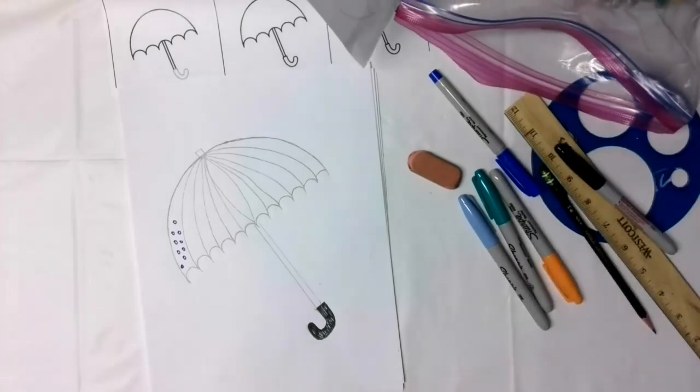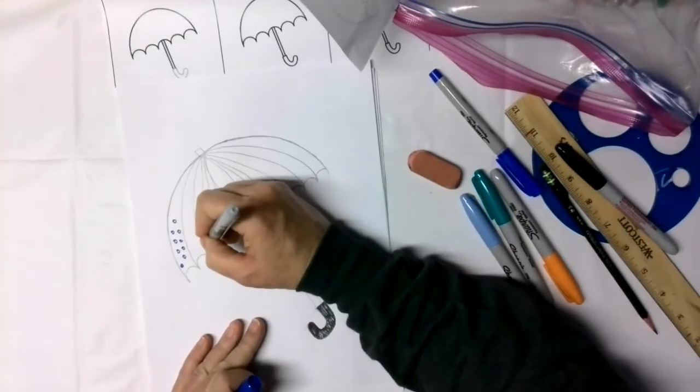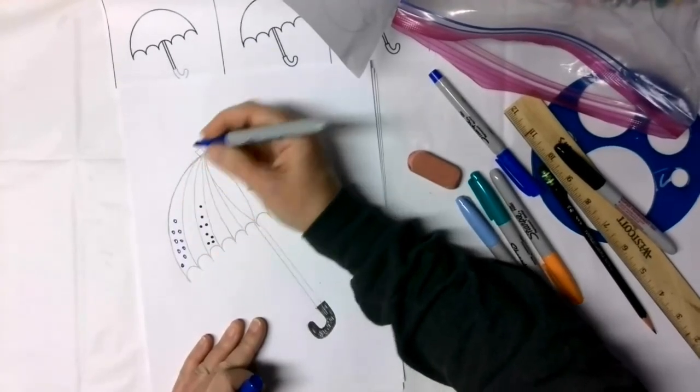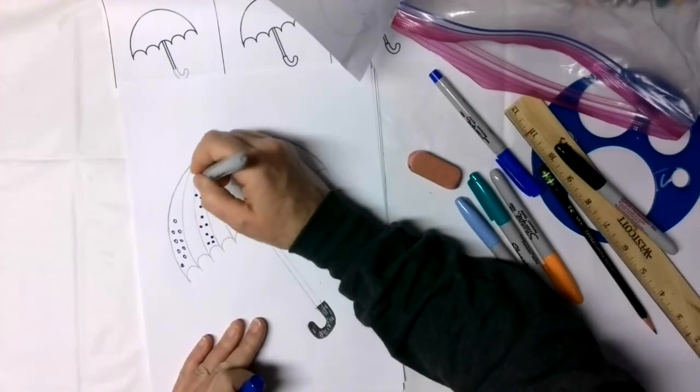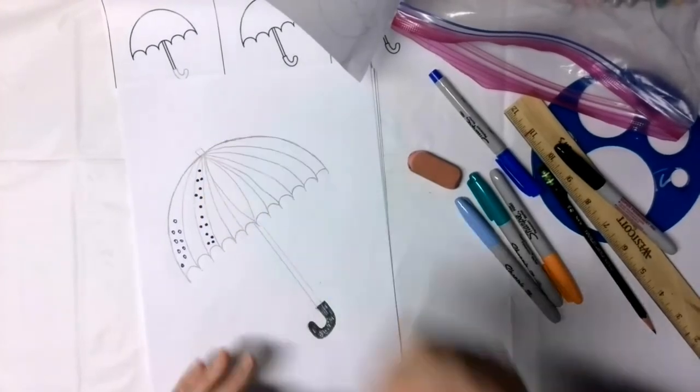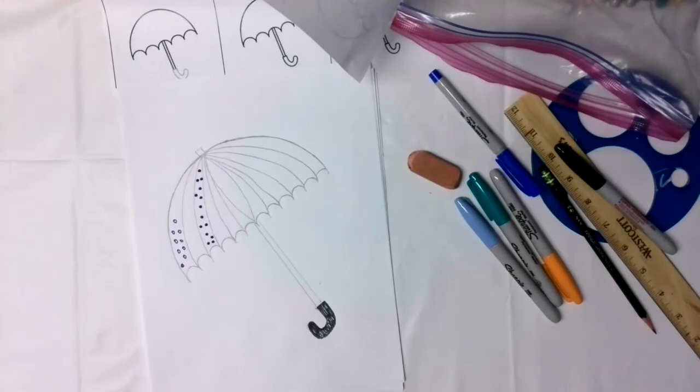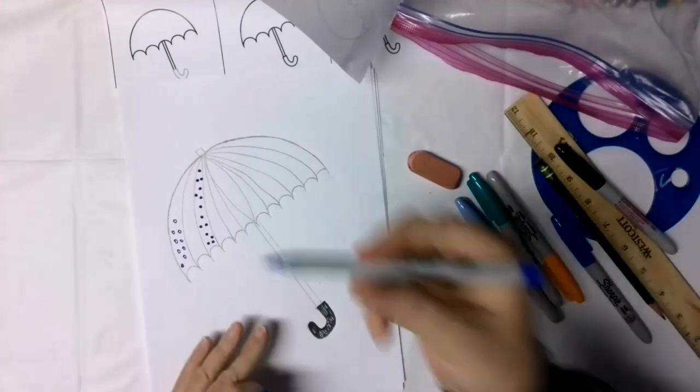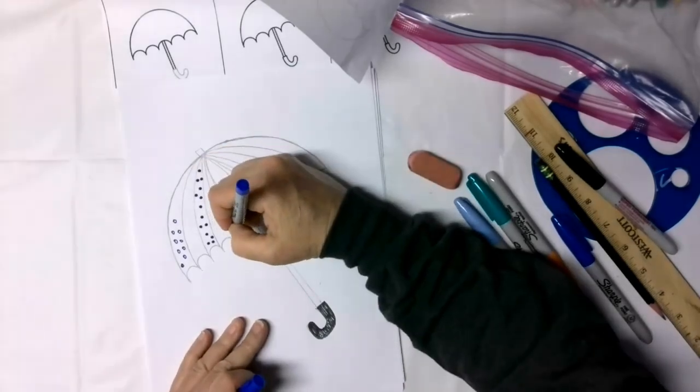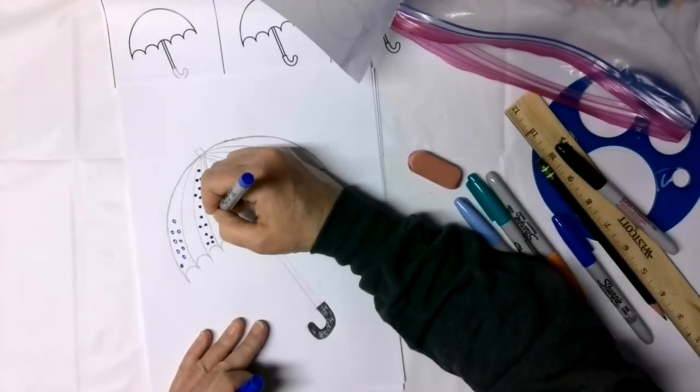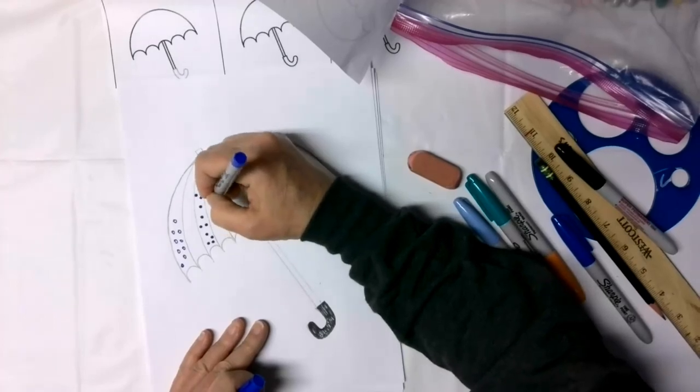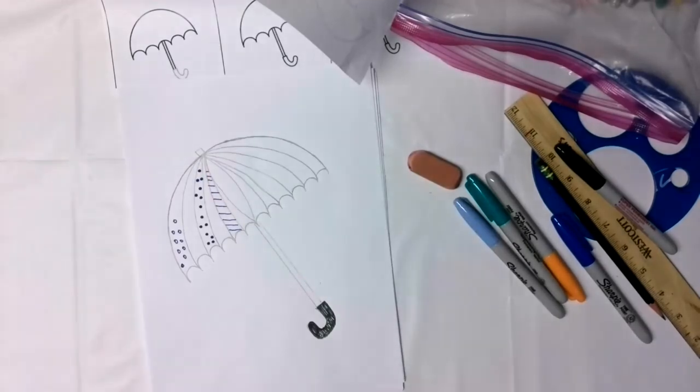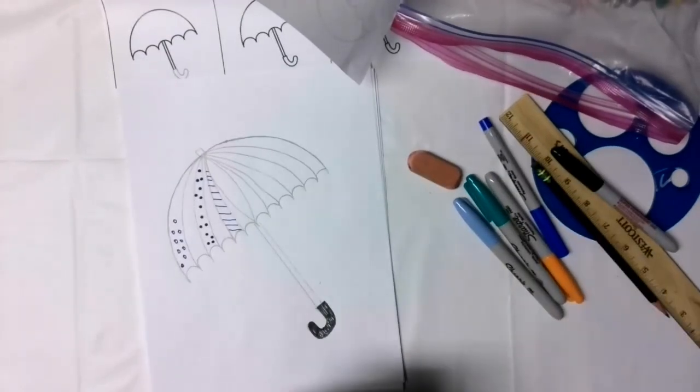So again, I'm just going to randomly reach into my bag and see what color comes out. Oh, we have blue again. So let's do, we'll do every other one blue and this time I'm going to do solid dots. So on the first one, I did circles and now we're going to do solid dots.